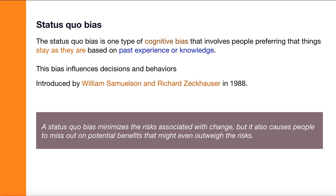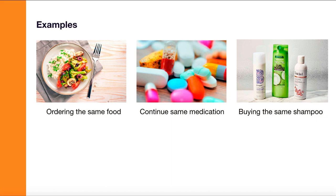For example, say you want to choose a new health insurance plan or provider. If you already have an existing health insurance plan and you have a strong status quo bias, you would never want to switch to another plan or provider because you feel everything works well as it is. You might also fear the risks of switching. But if the other provider was offering something better, you're missing out on those potential benefits.